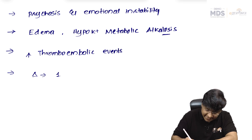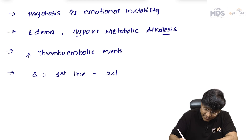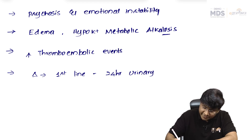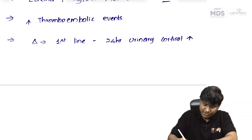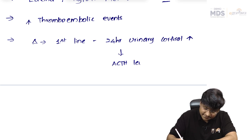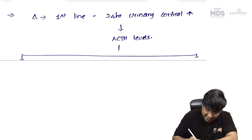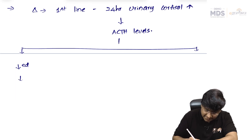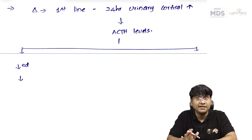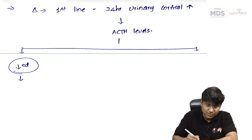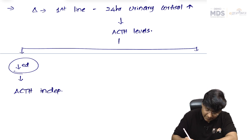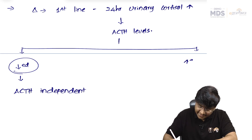Regarding workup: the first-line investigation is 24-hour urinary cortisol levels. If elevated, you then check ACTH levels. If ACTH levels are reduced, suspect an adrenal gland disorder — ACTH-independent Cushing's. If ACTH levels are increased, suspect ACTH-dependent Cushing's.